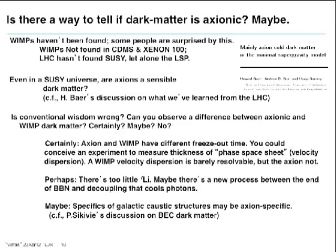I don't mind a factor of 10, but factors of a thousand and more get me nervous. WIMPs have not been found in very powerful detectors, and certainly the LHC hasn't found SUSY, let alone the lightest supersymmetric partner. Since Frank tells us it's axions and WIMPs, if I de-rate WIMPs, I relatively speaking increase axions — that's not a very good argument, but I have to say it. However, even in a SUSY universe, axions are actually a sensible dark matter candidate.